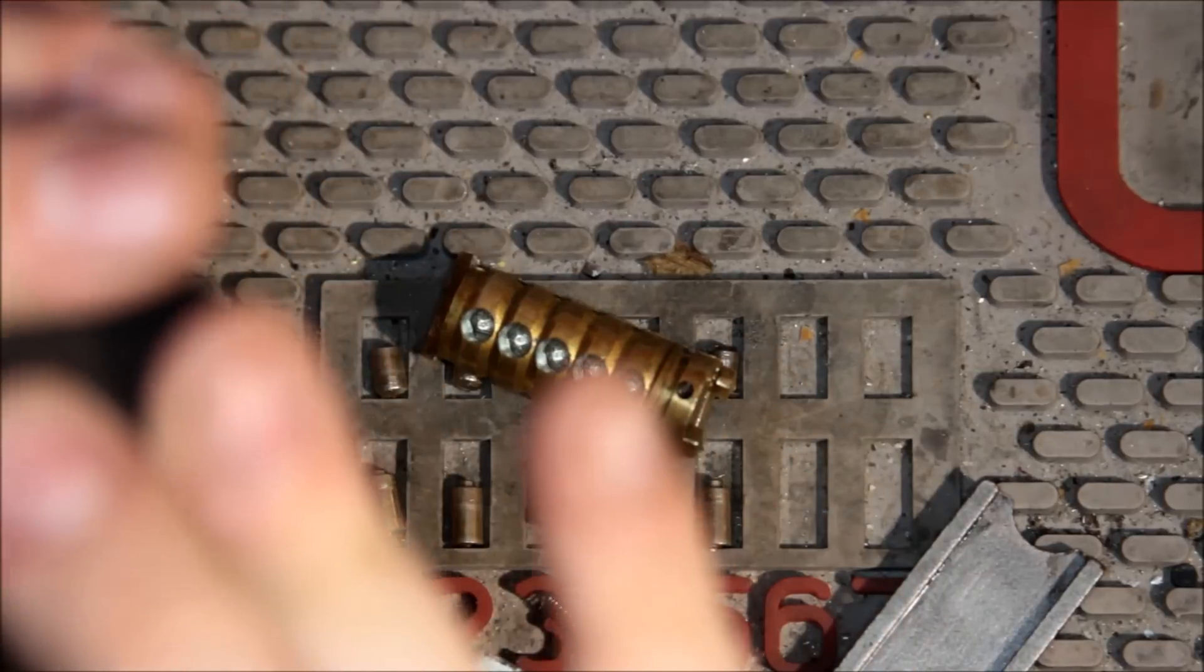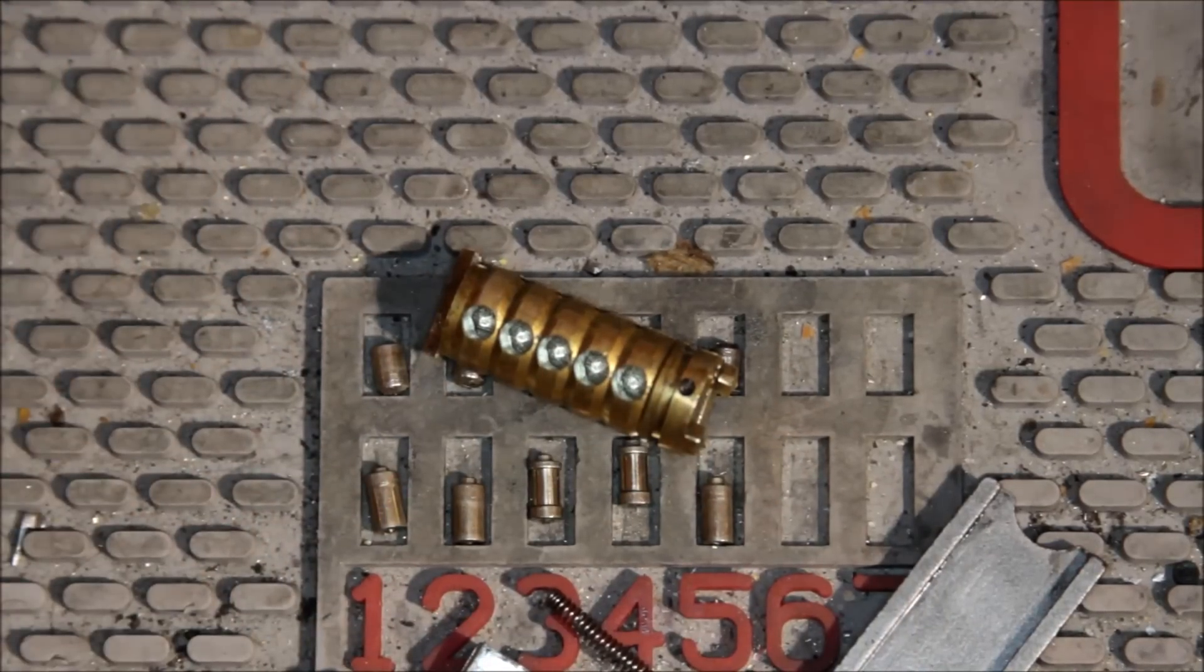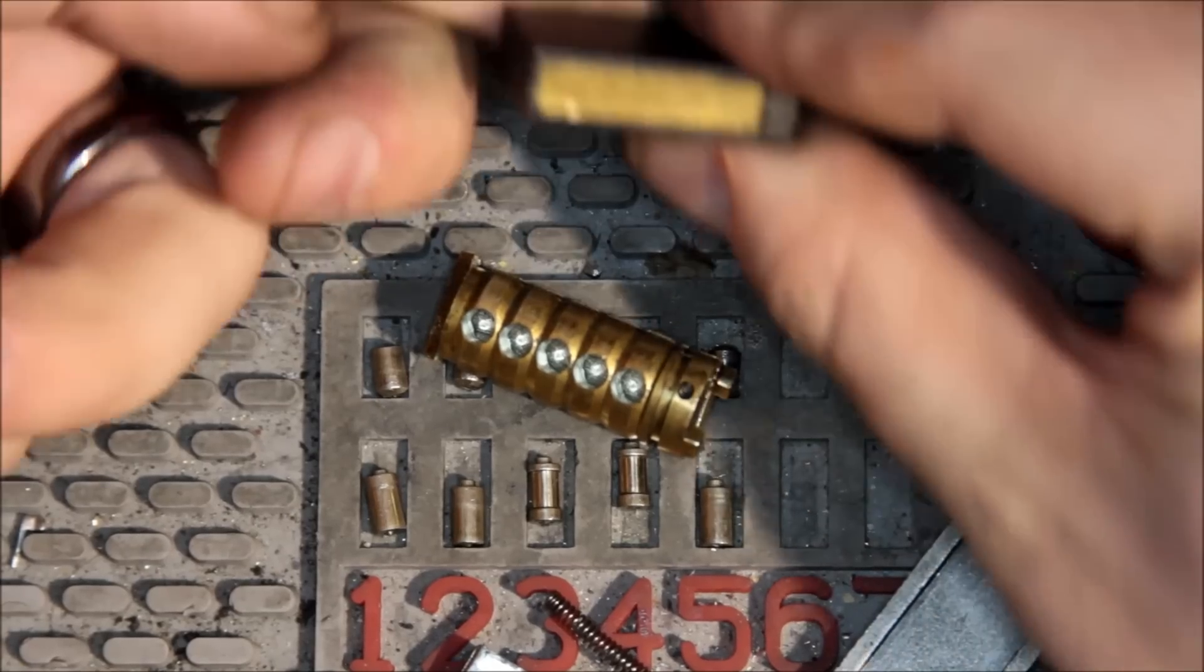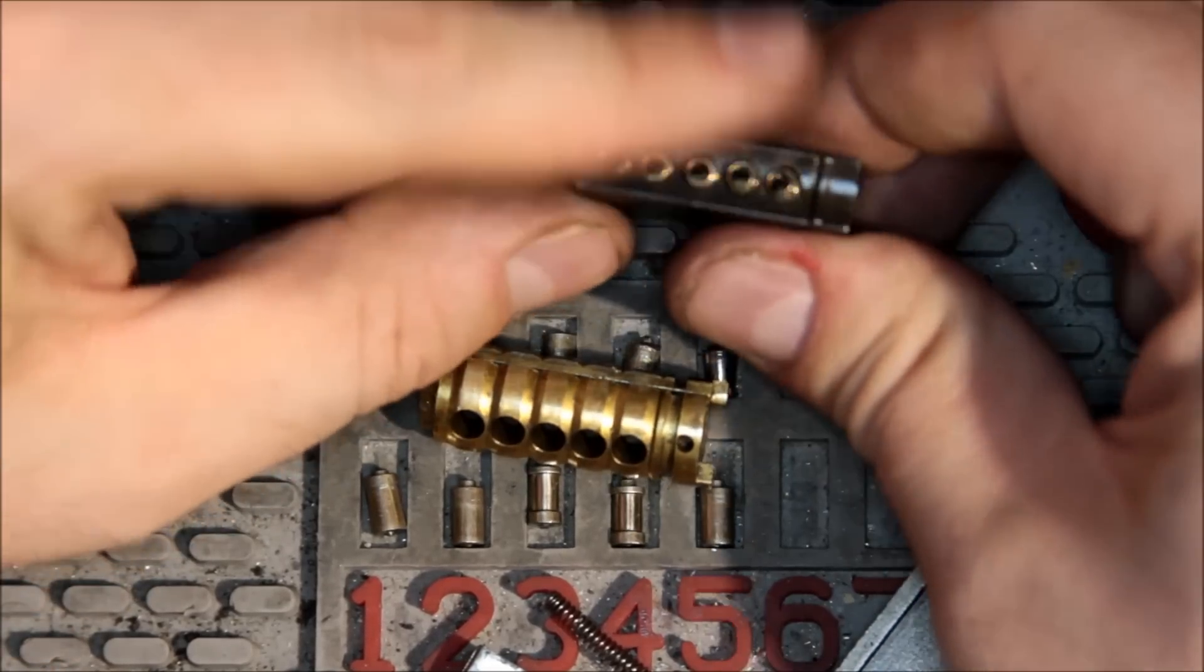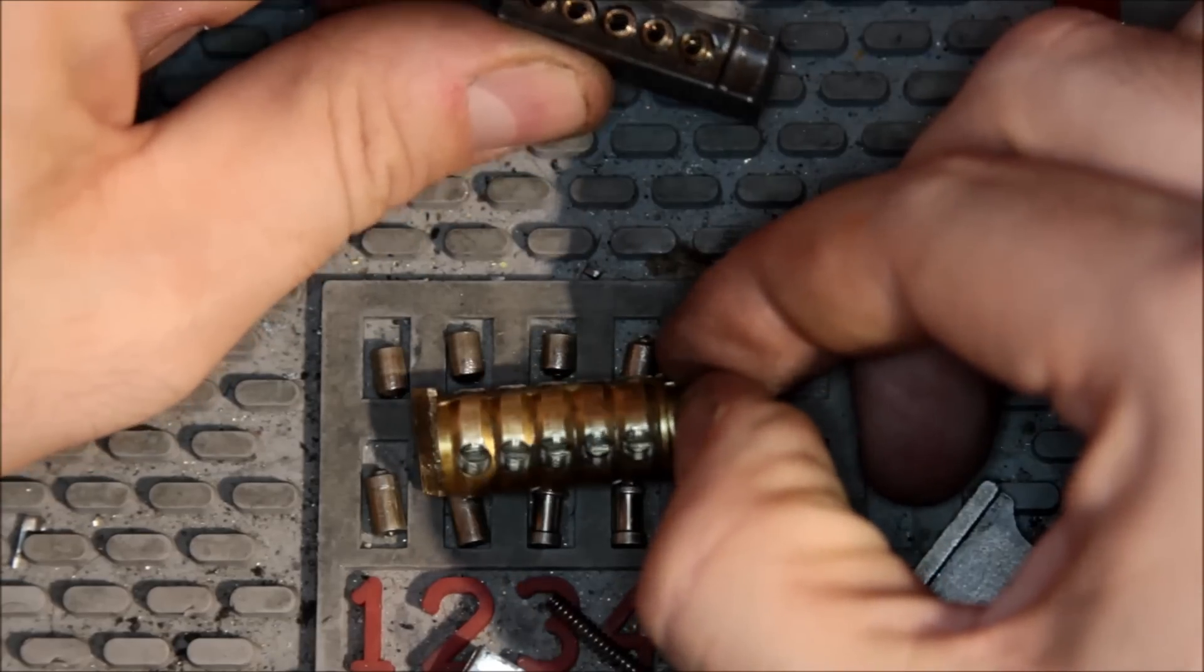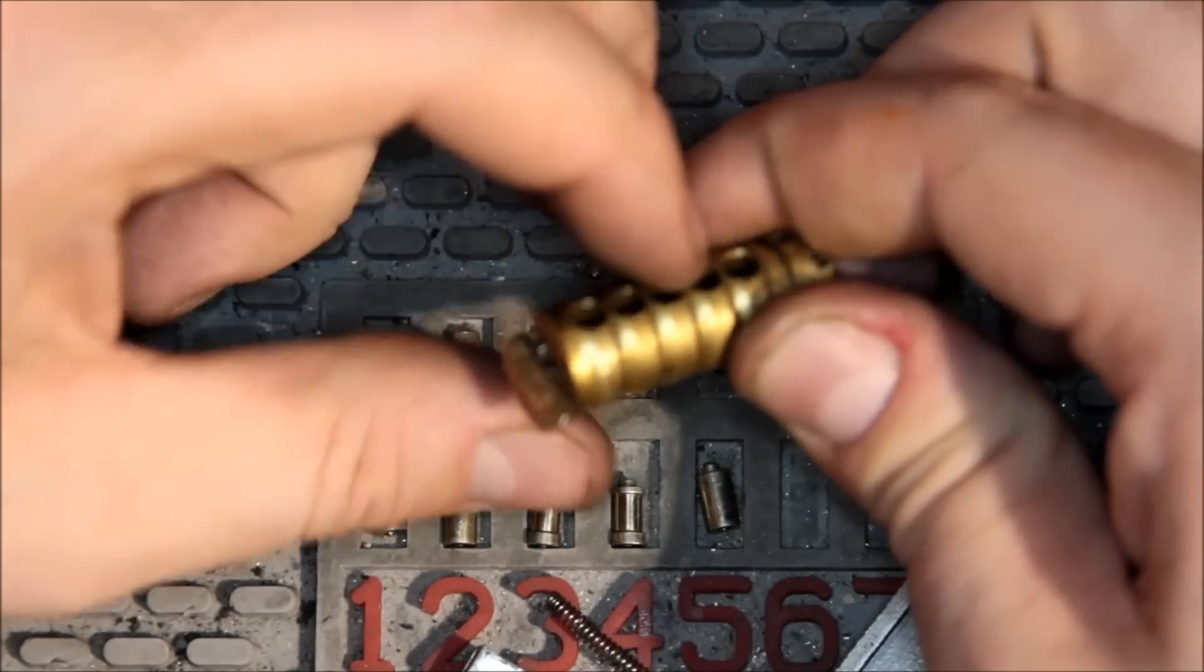I'm not really sure what keeps this in other than maybe its own spring tension. There don't seem to be any detents or catches or anything. But anyway, so there's the Bible. And that indexes on this part here, so it lines up correctly. And that's it.